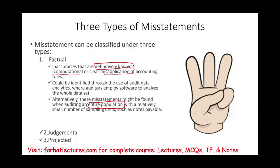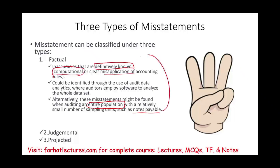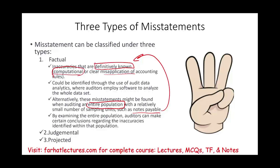Or they can be found when we're auditing an entire population with a relatively small number of units. Like if we are auditing notes payable, a company could have two, five, fifteen, or twenty loans. Usually when you're auditing loans, you audit all of them. You look at the loan application, the interest rate, you compute the interest. If it's a long-term loan, you break it into its short-term and long-term component. If you find a computational error — say, you computed the interest expense incorrectly — no one can argue about those. By examining an entire population, we can find those definite errors and ask the company to fix them. Those are factual misstatements.